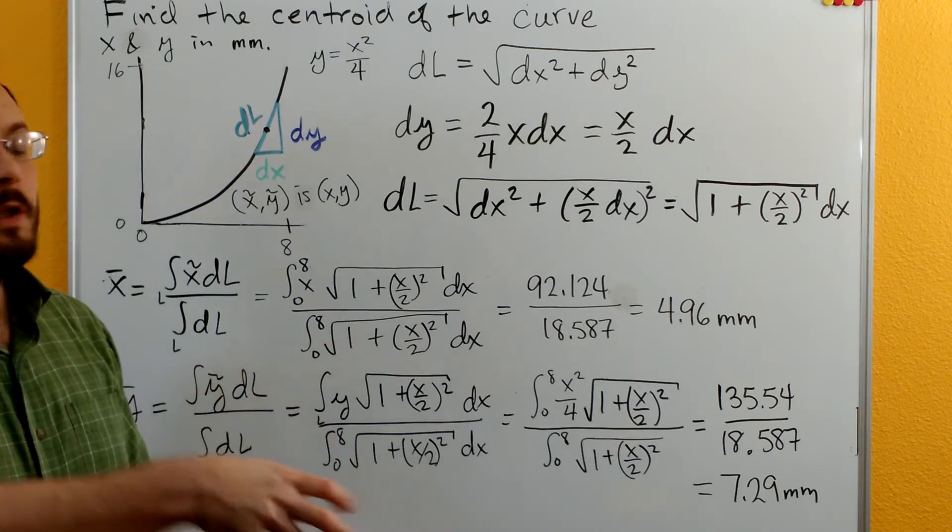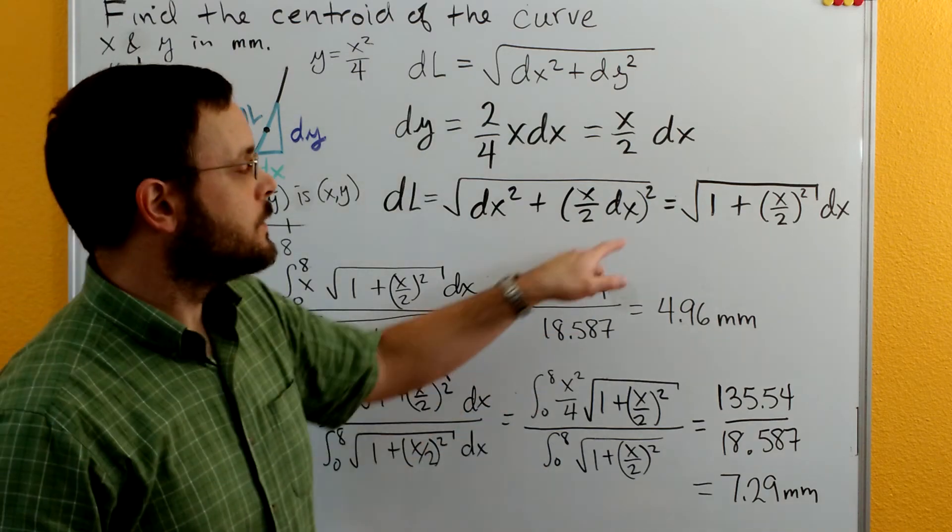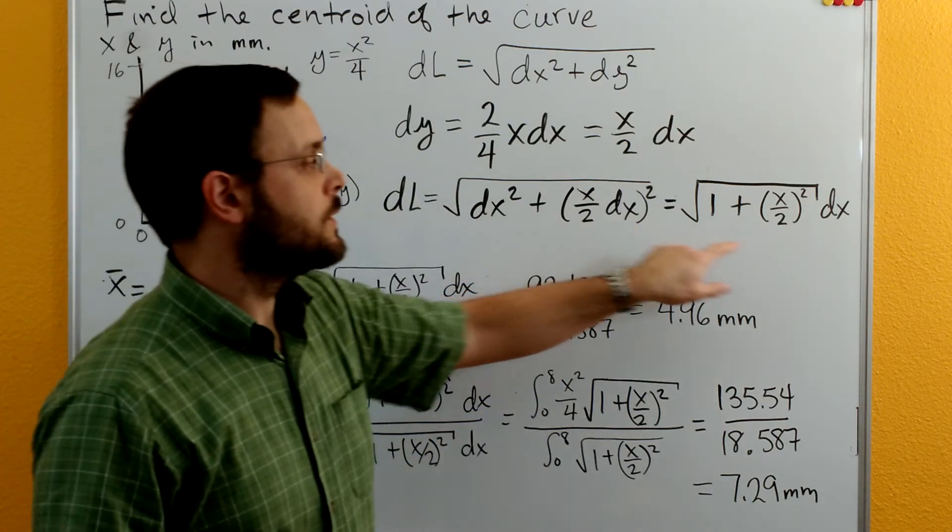As we pull it out from under the square root we're going to take a square root of the dx squared and just get dx.